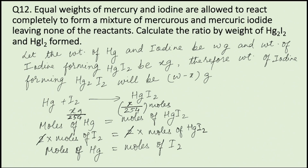Now we know moles of Hg equals moles of iodine, which equals x divided by 254. Therefore the weight of mercury involved in this reaction will be moles of Hg multiplied by atomic weight of Hg, that is 200.6.